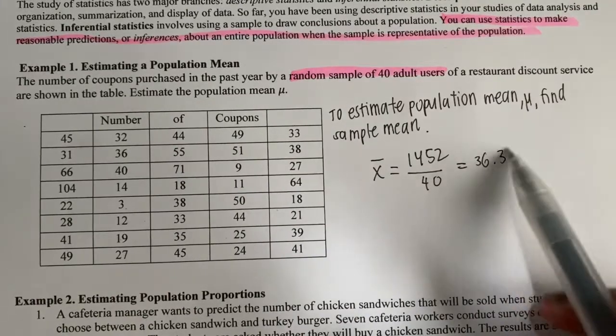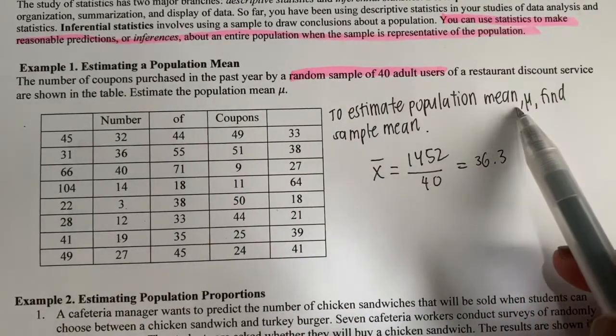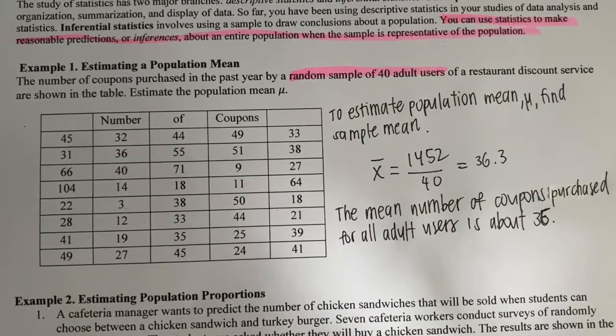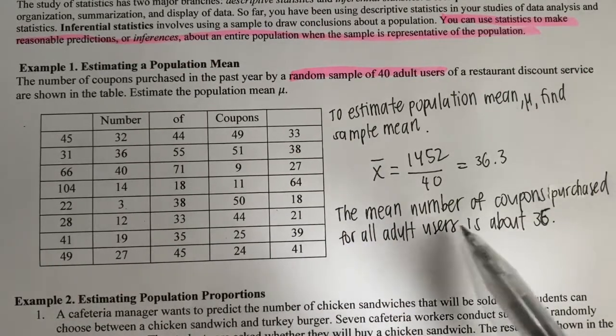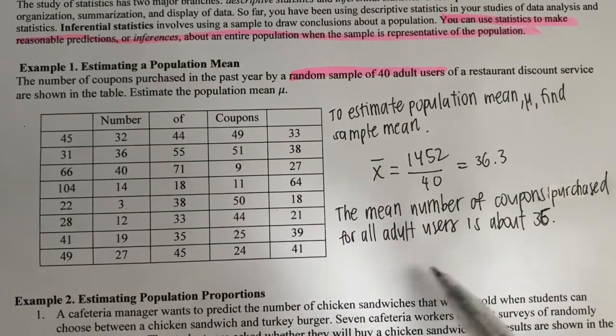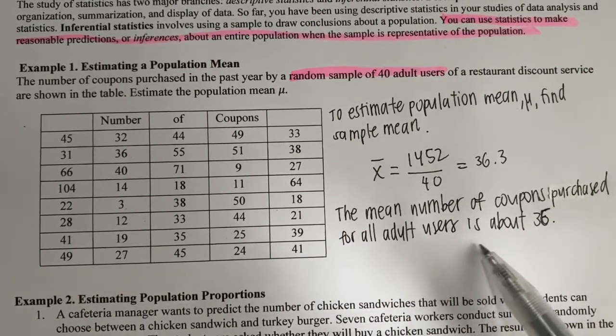So the sample mean will be used in place of the population mean. Using the sample mean, we can say the mean population in coupons purchased for all adult users is about 36.